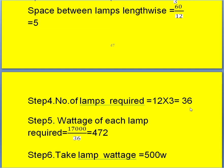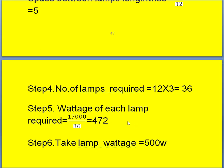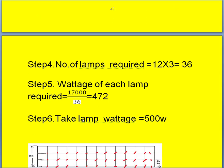Knowing total lamps required and total wattage, we calculate the wattage of each lamp: 17,000 divided by 36 gives 472 watts per bulb. Since 472-watt lamps are not available in the market, we select the next standard size, that is 500-watt lamps.